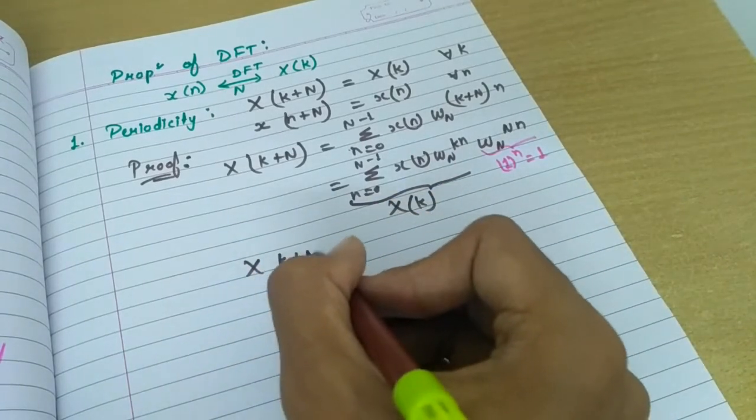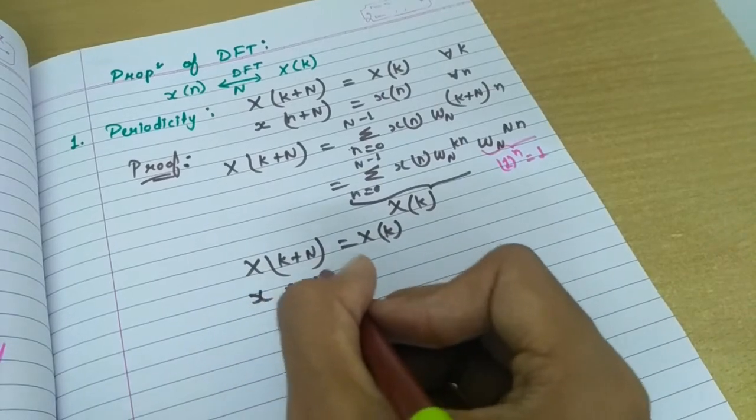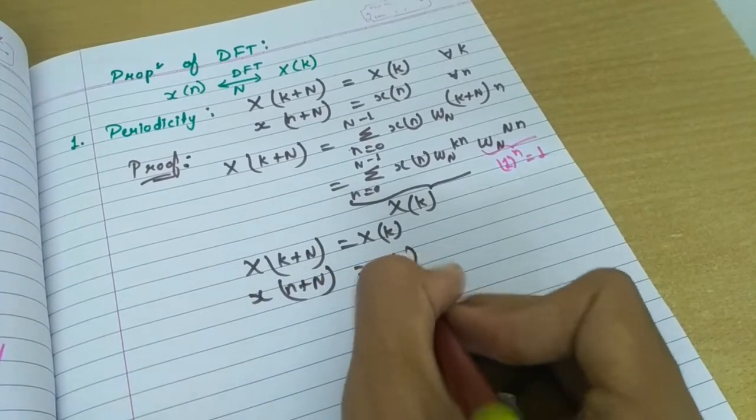So, hence it is proved and similarly, you can prove X of n plus n is nothing but X of n. Clear?